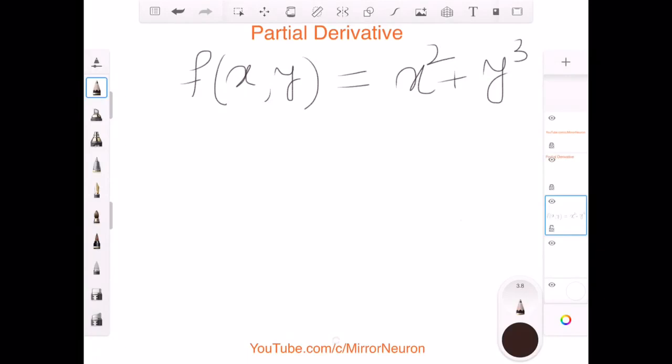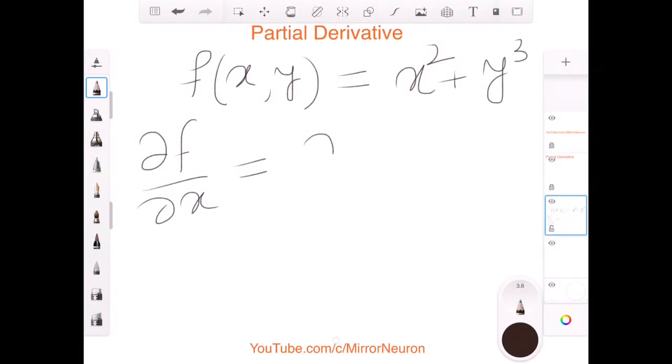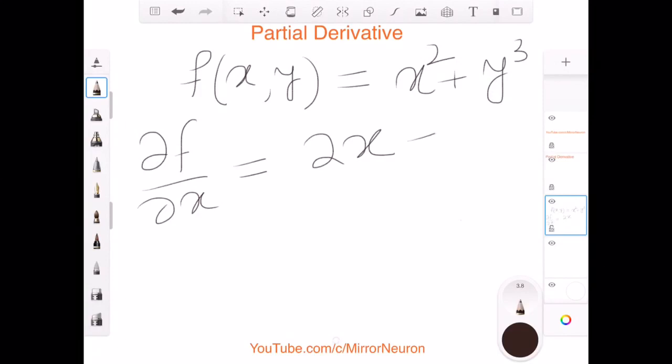In our housing price project it could be x could be the area and y could be say number of bedrooms in that house. So typically we will see this notation df with respect to x and that is when we take the derivative with respect to x. So derivative of x square is 2x and because y is constant with respect to x, it will be 0.